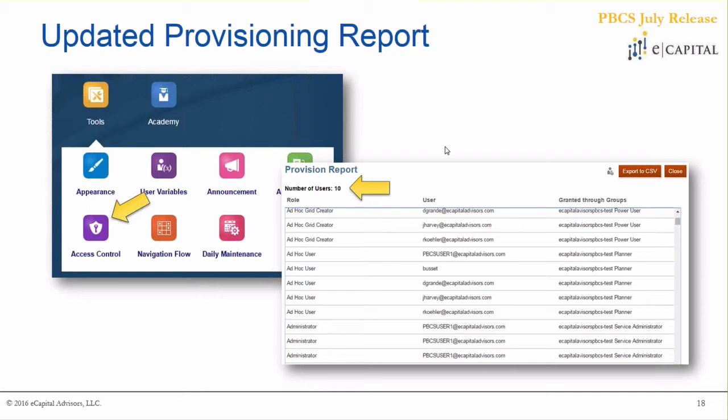The next piece is a small but nice addition. You can run an updated provisioning report by going to Tools and Access Controls, and right from the top it will now tell you the number of users provisioned for your application. If you as an administrator are ever getting questions through auditing exercises or similar, you can very easily run this report and get the full number of provisioned users.